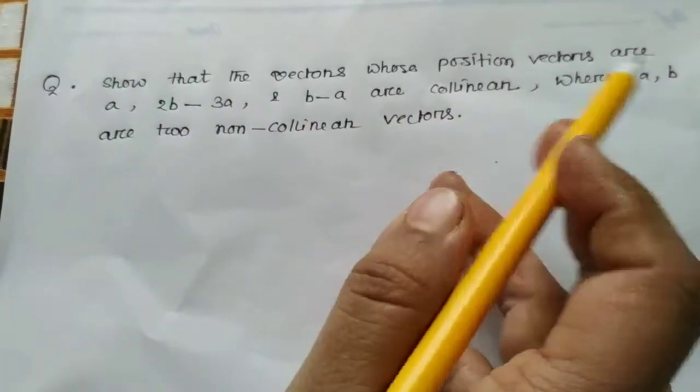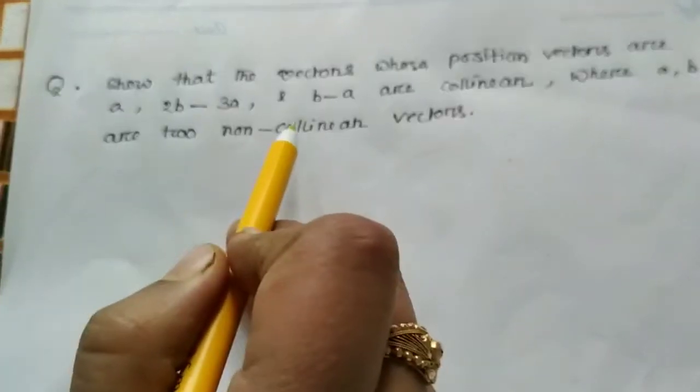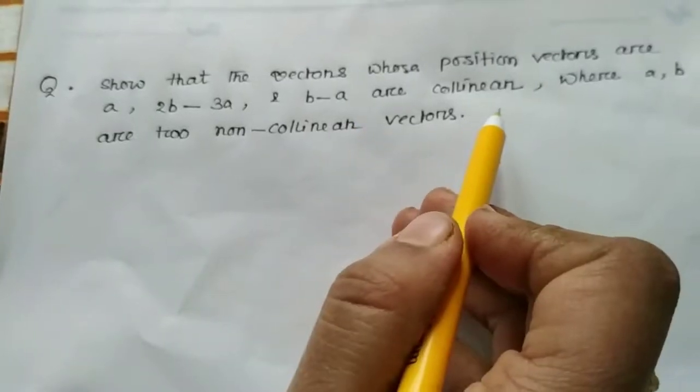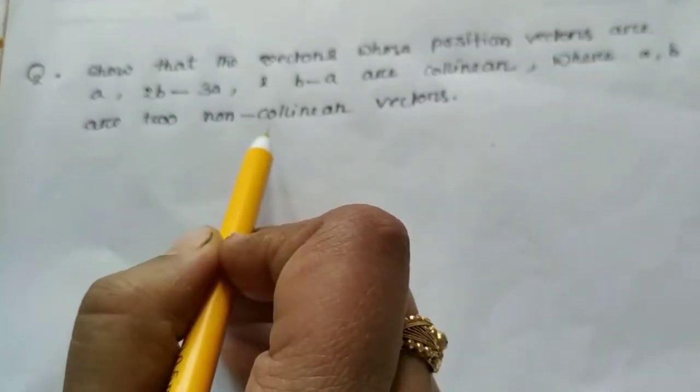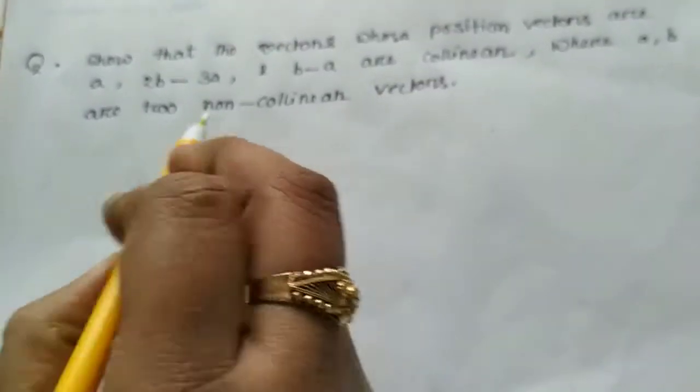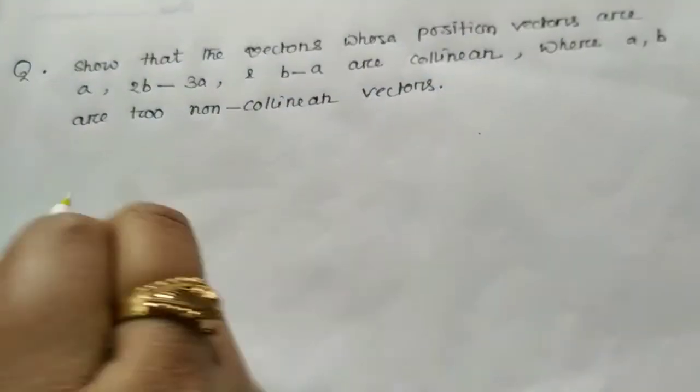Show that the vectors whose position vectors are a, b minus 3a, and b minus a are collinear, where a and b are two non-collinear vectors.